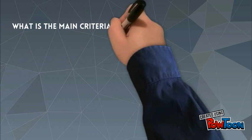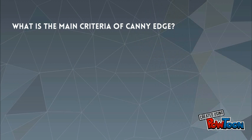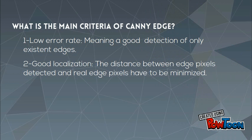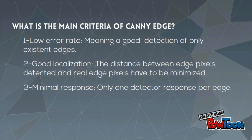What is the main criteria of Canny Edge? Low error rate, meaning a good detection of only existent edges. Good localization: the distance between edge pixels detected and real edge pixels has to be minimized. Minimal response: only one detector response per edge.